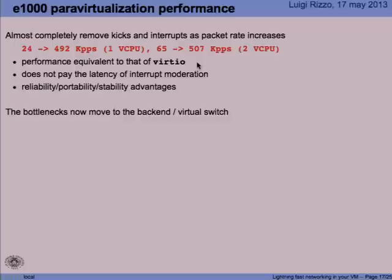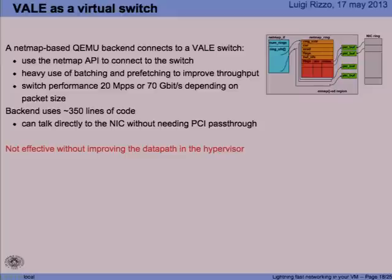Now, how can we go faster than this? This is basically the throughput of the switch — Linux bridge or whatever — using the TAP interface as a communication channel. So we need to improve that part of the system. That involves using a faster virtual switch at the bottom interconnecting the two virtual machines. The Vale switch is a perfect thing to use in this particular case.